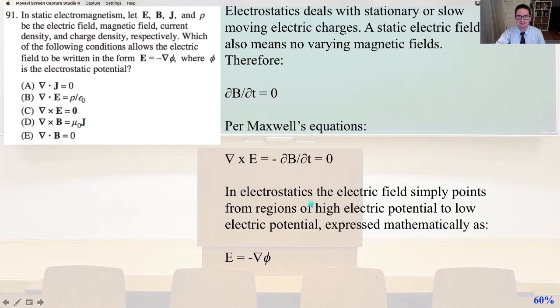So electrostatics deals with stationary or slow-moving electric charges. The static electric field, a static electric field, also means no varying magnetic fields. Therefore, the partial of B divided by the partial of T equals zero. So per Maxwell's equations,